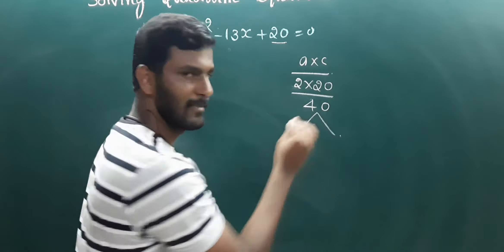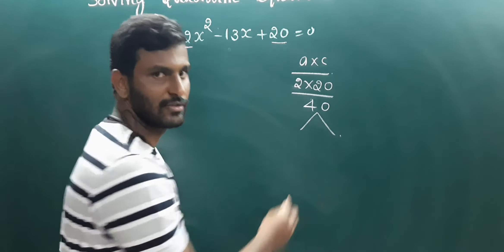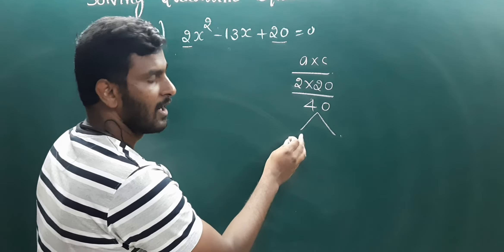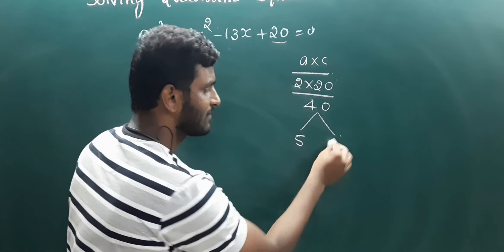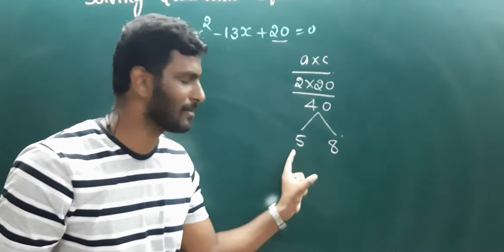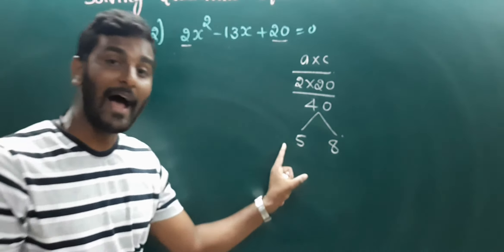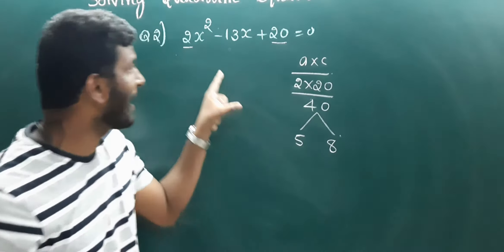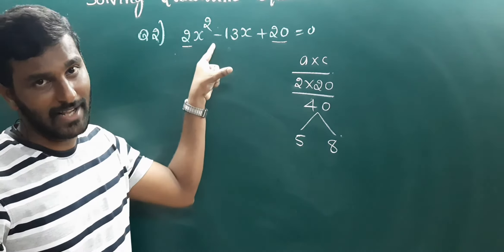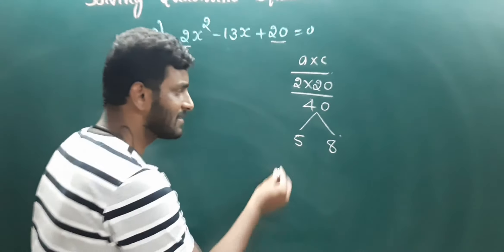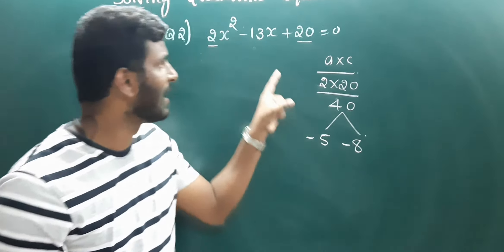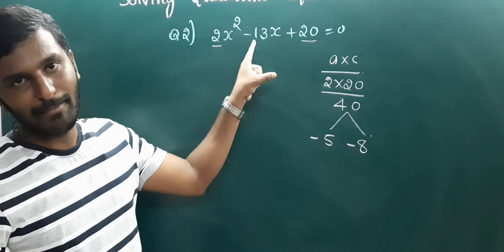Hence we have to find two numbers. Which are the two numbers? They are 5 and 8. If you multiply the two numbers, it is 40. And since we need to get minus 13 by addition, both numbers must be negative. Hence minus 5 plus minus 8 equals minus 13.